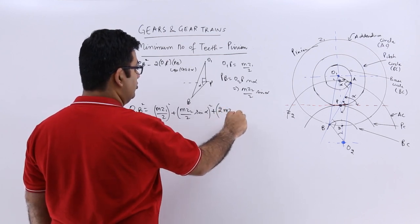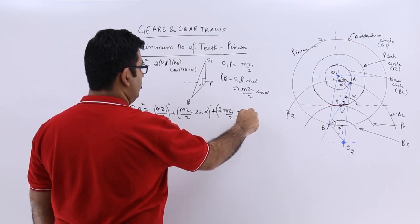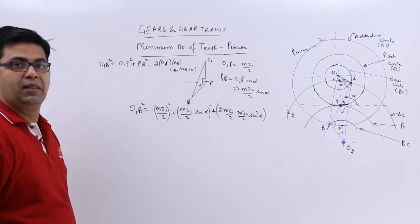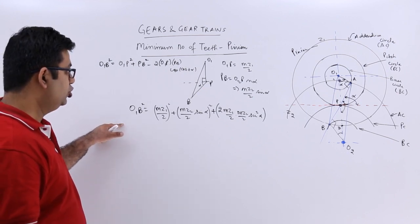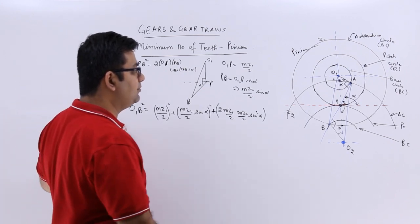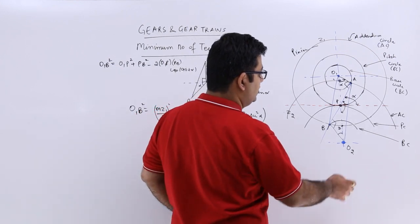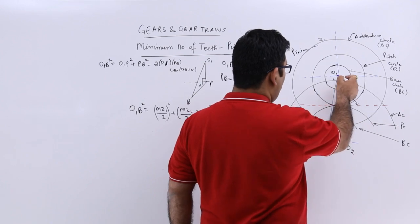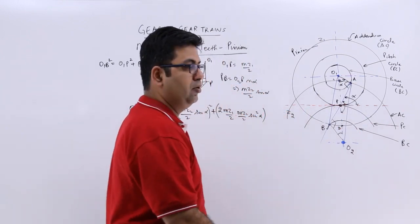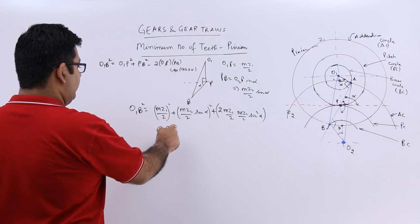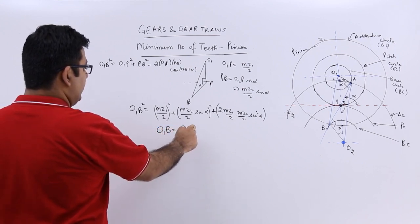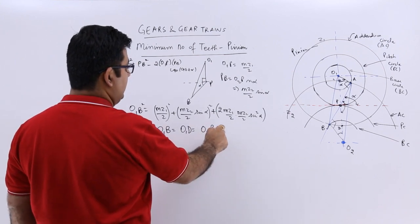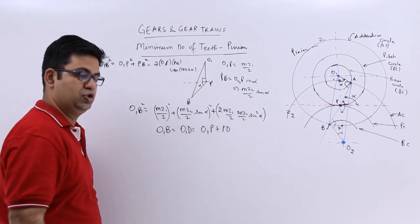Now if I look at this particular part which is O₁B, this is equal to O₁D. So O₁B equals O₁D which equals O₁P plus PD.